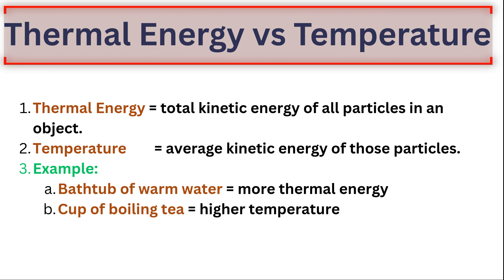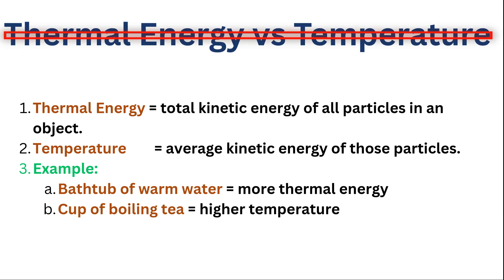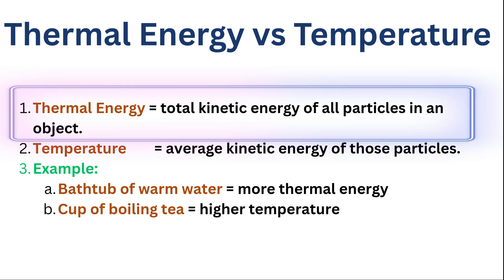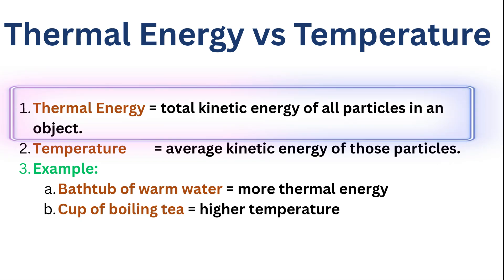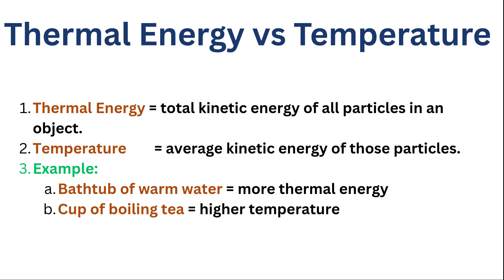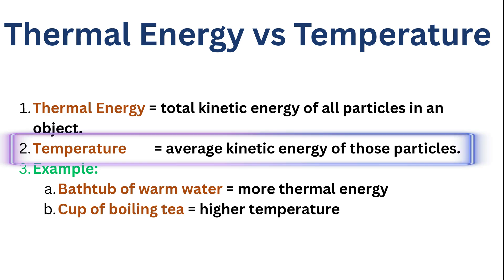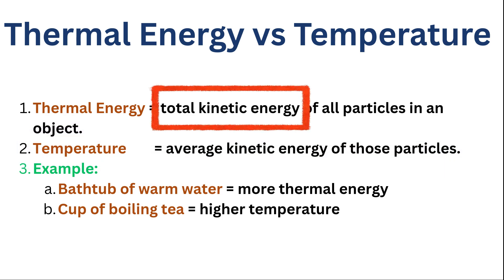Before going further, it's important to understand the difference between thermal energy and temperature. Thermal energy is the total energy of all moving particles in an object. For example, if there is any object — solid or liquid — once you pass energy to it, the movement that occurs in the particles is known as thermal energy. Temperature, on the other hand, is the average energy of those particles. So thermal energy is the total energy of moving particles in an object, while temperature is the average energy of those particles.